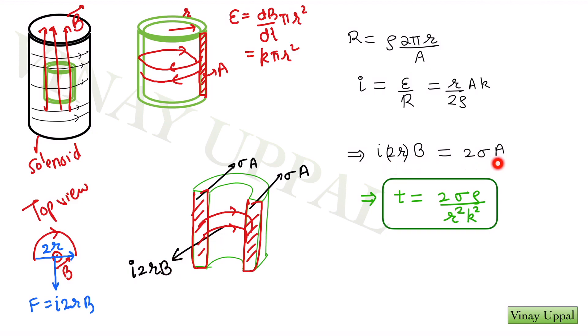And in equilibrium, I'll have I into 2r into B, the magnetic force is balanced out by 2 sigma A. And then it's a very simple case of simply substituting magnetic field as KT. Just substitute that here and substitute the current and you'll get time as 2 sigma rho by r square k square. So hope you guys have understood the solution.